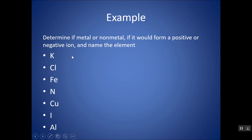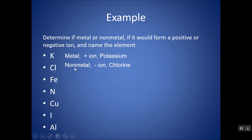For practice, determine if these elements are metals or non-metals, and based on that, tell me if they would form a positive or negative ion — remember, metals form positive and non-metals form negative ions. K is a metal, therefore it forms a positive ion — that's potassium. Cl is a non-metal to the right of the staircase — it forms a negative ion — named chlorine. Iron is to the left, so it's a metal and would form a positive ion.